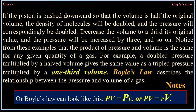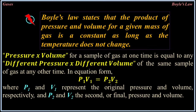Boyle's law describes the relationship between the pressure and volume of a gas: P×V = constant, or equivalently PV = P'V'. Boyle's law states that the product of pressure and volume for a given mass of gas is a constant as long as the temperature does not change. In equation form: P₁V₁ = P₂V₂, where P₁ and V₁ represent the original pressure and volume, and P₂ and V₂ the second or final pressure and volume.